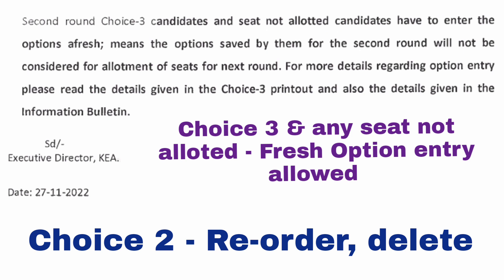Those are the two types of students who can actually do a fresh option entry. It says second round choice three candidates and seat-not-allotted candidates have to enter the options fresh — meaning the options saved by them for the second round will not be considered for allotment in the next round. So these are the only two types of students who can do a fresh option entry.